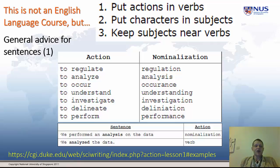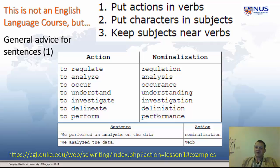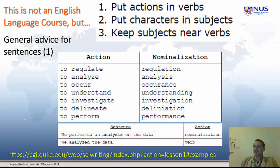A verb is a doing word, an action word. The way we want you to write: 'we analyzed the data' — you've got a verb. Many people turn the verb into a noun: 'we performed an analysis on the data.' This nominalization means you're going into passive voice or third-party writing. The advice of all the good journals is: don't do this, or do it sparingly. This is also drawn from the Duke Science Writing Course.